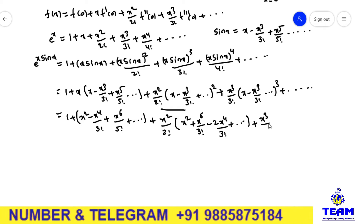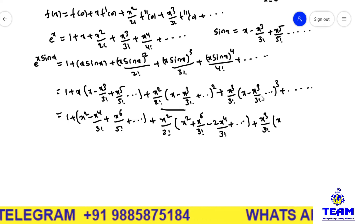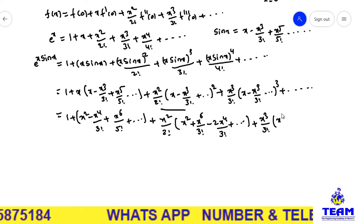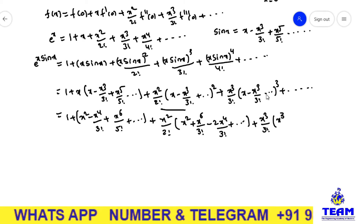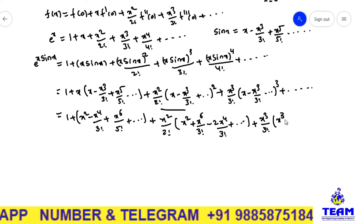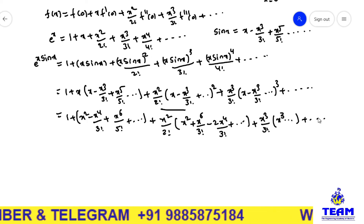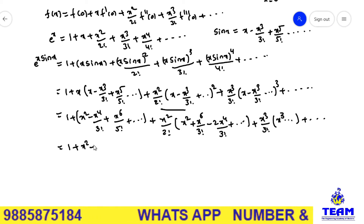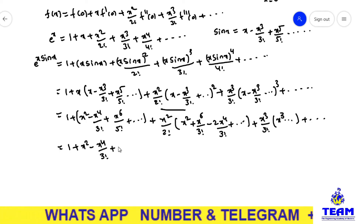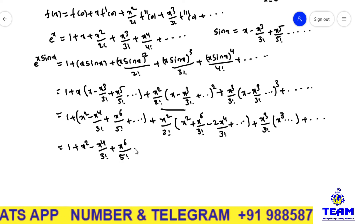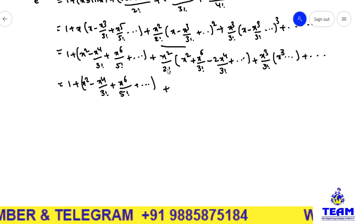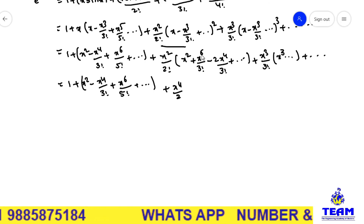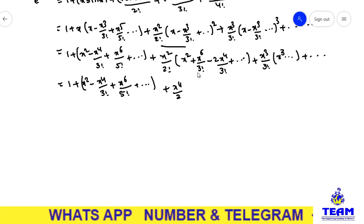For the cube term, x³/3! is there. Using (a−b)³ expanded, we only want the x³ term: x³ whole cubed gives x⁹ which we don't want, so we leave it. Multiplying x²/2! inside: we get x⁴/2 as coefficient. This is x power 6 combined with x power 2, so x⁸ terms we don't want and are not taken.